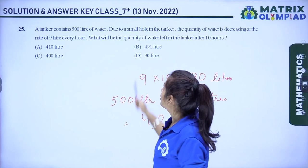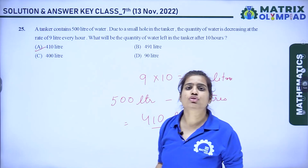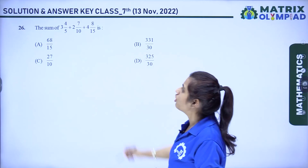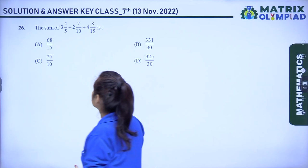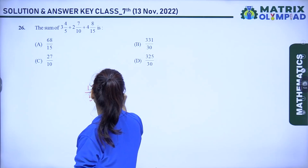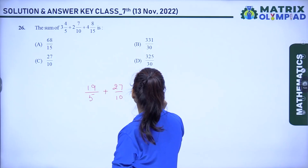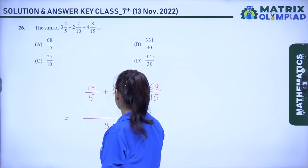Question 26: find the sum of 3 and 4/5 plus 2 and 7/10 plus 4 and 8/15. Convert to improper fractions, then take the LCM of 5, 10, and 15 which is 30.